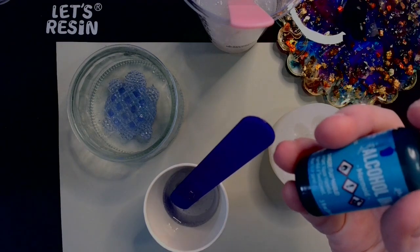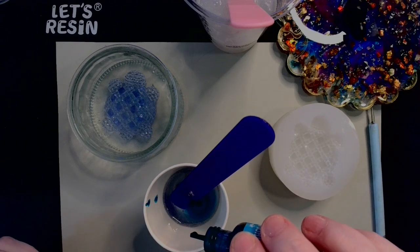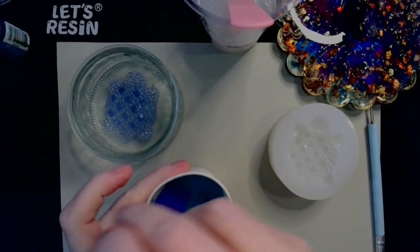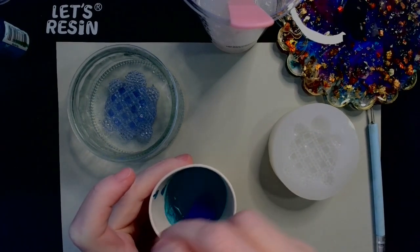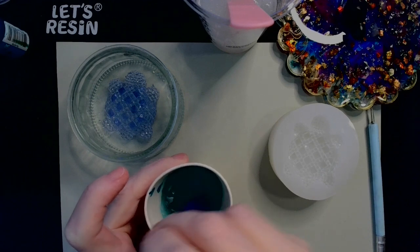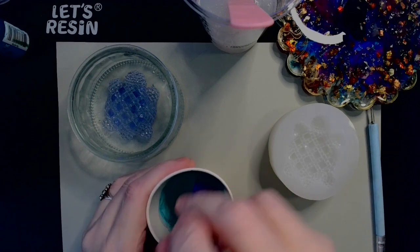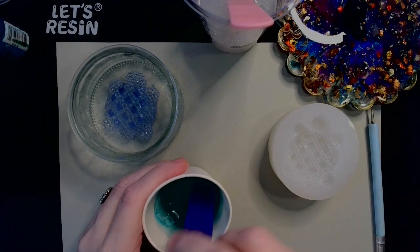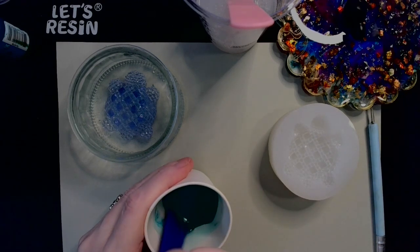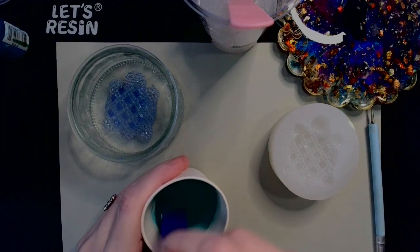And I'm using my Ranger Alcohol Ink in Mermaid, which is a beautiful teal color. So, I'm going to go ahead and add three drops to that, because I want the color relatively prevalent. I definitely want you to be able to see that it's teal. I've already mixed up the resin. I'm just adding the color now. And then I'll let it sit for a little bit to sort of de-gas itself.